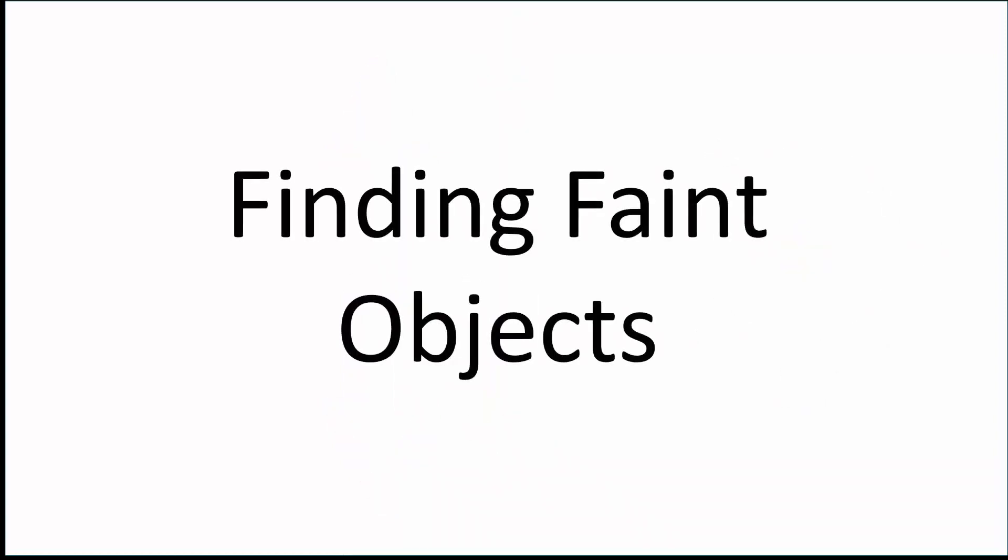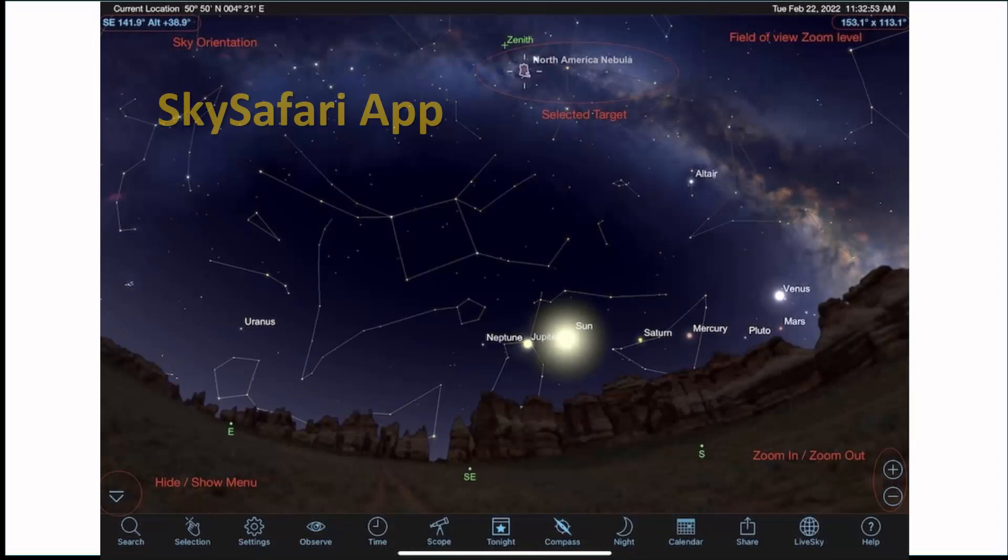Finding faint objects uses much the same technique. However, before planning an evening of observing faint objects such as nebulae and faint star clusters, I suggest you learn how to operate a planetarium app such as Sky Safari.